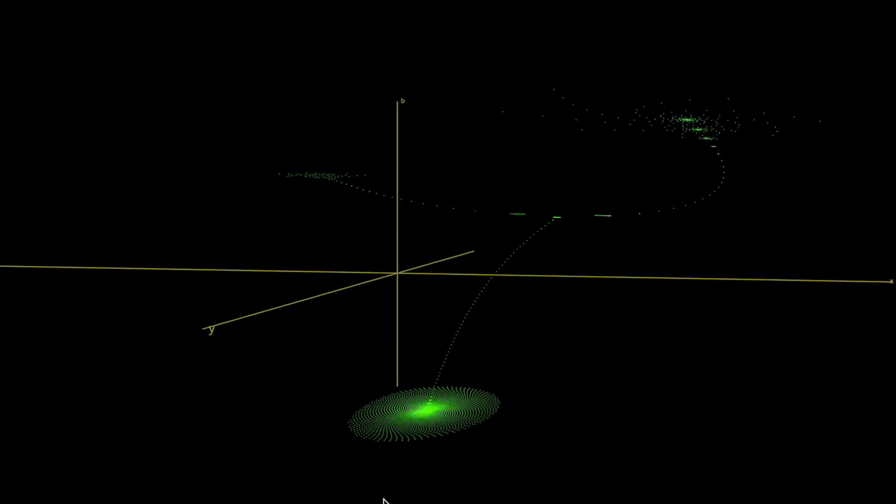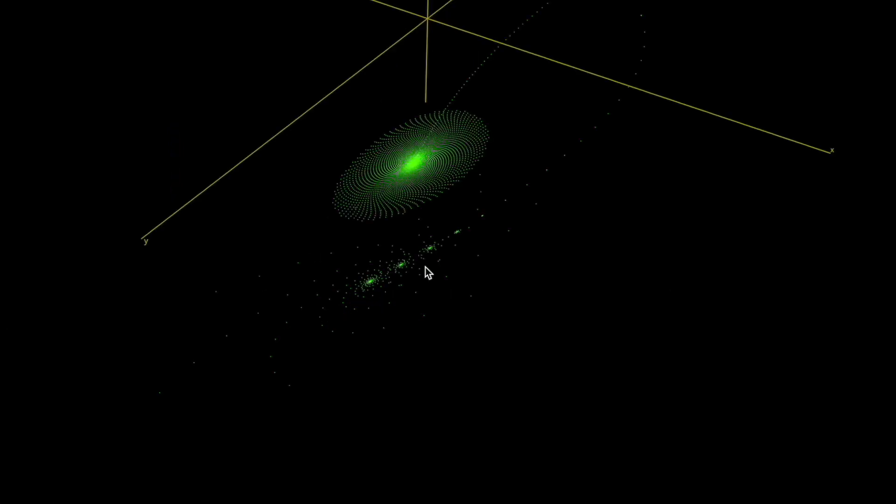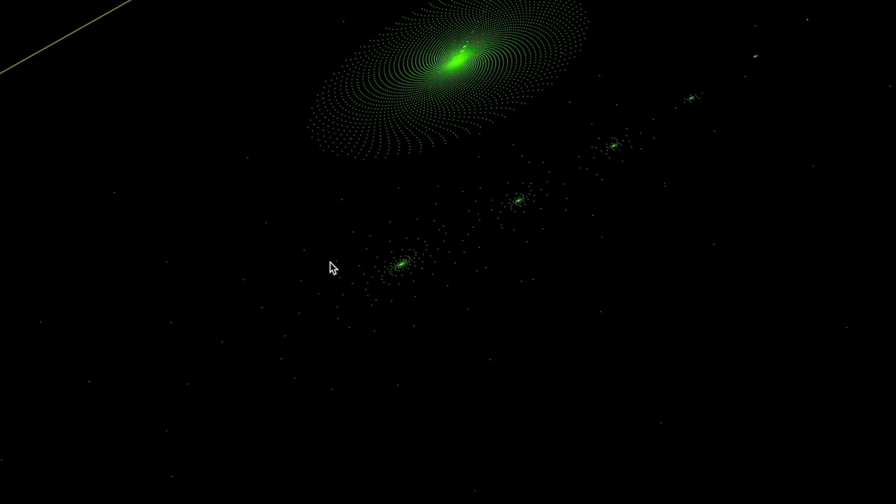If we zoom into the base of this structure, we can see the large single spiral at the bottom, as well as smaller ones above it. And now let's zoom out and look at one of the two spirals on top.